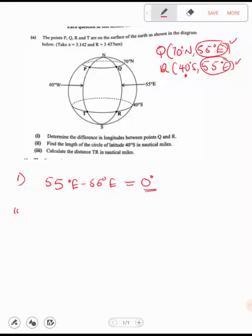Next is number two. Number two says, find the length of the circle of latitude 40 degrees south in nautical miles. They want you to find the length of the circle. Now, when they say the length of this circle, it's just the same as they are trying to say find the circumference. Now, this circle here has got a latitude L. The L is 40 degrees south. So we are going to say circumference of the circle or length is equal to 2πR cos L.